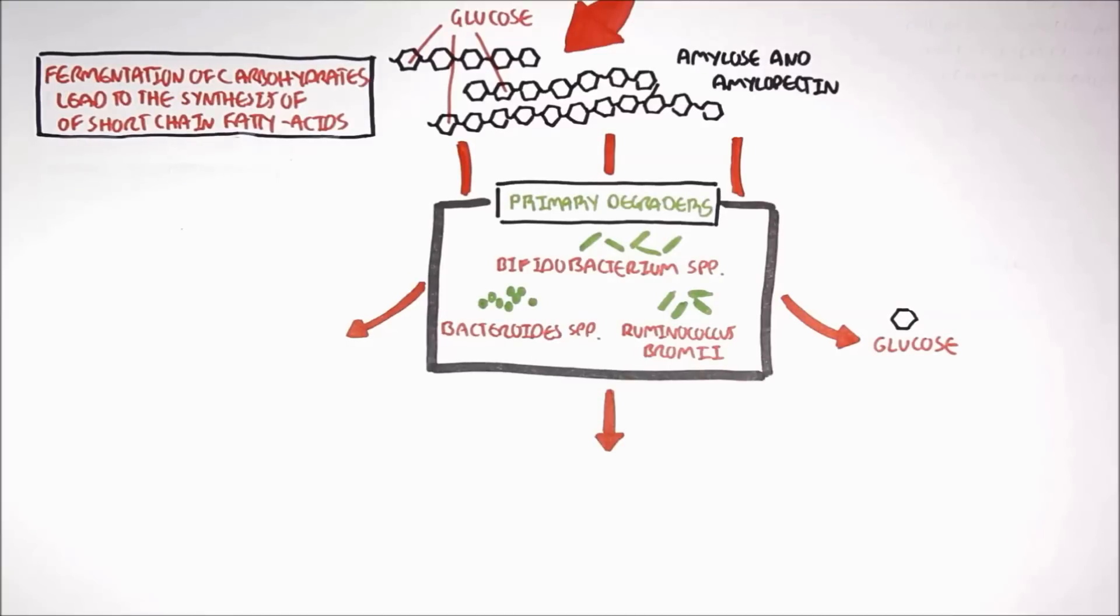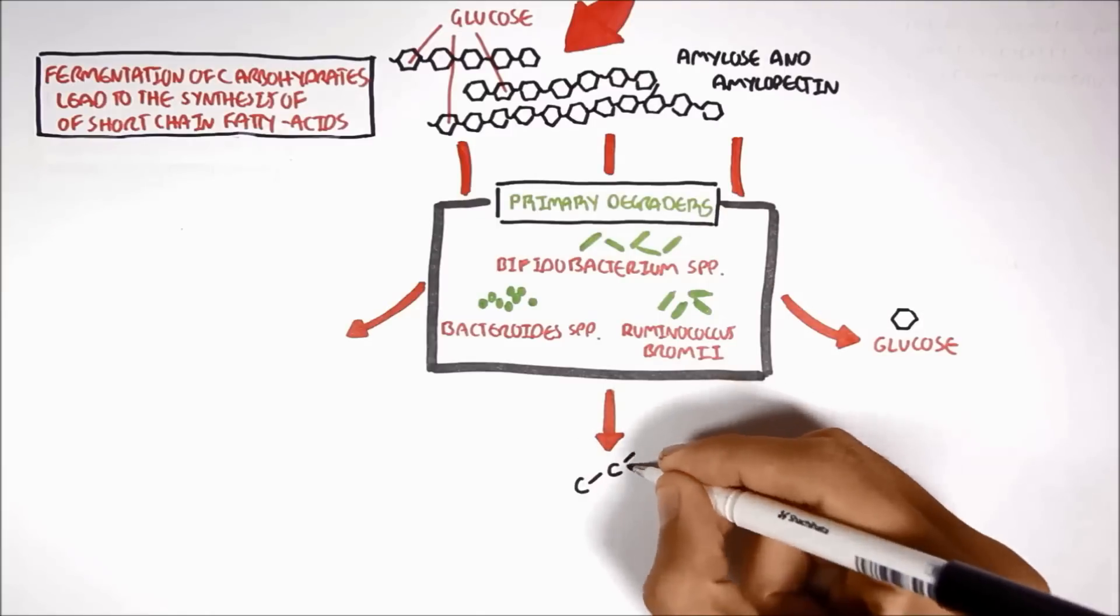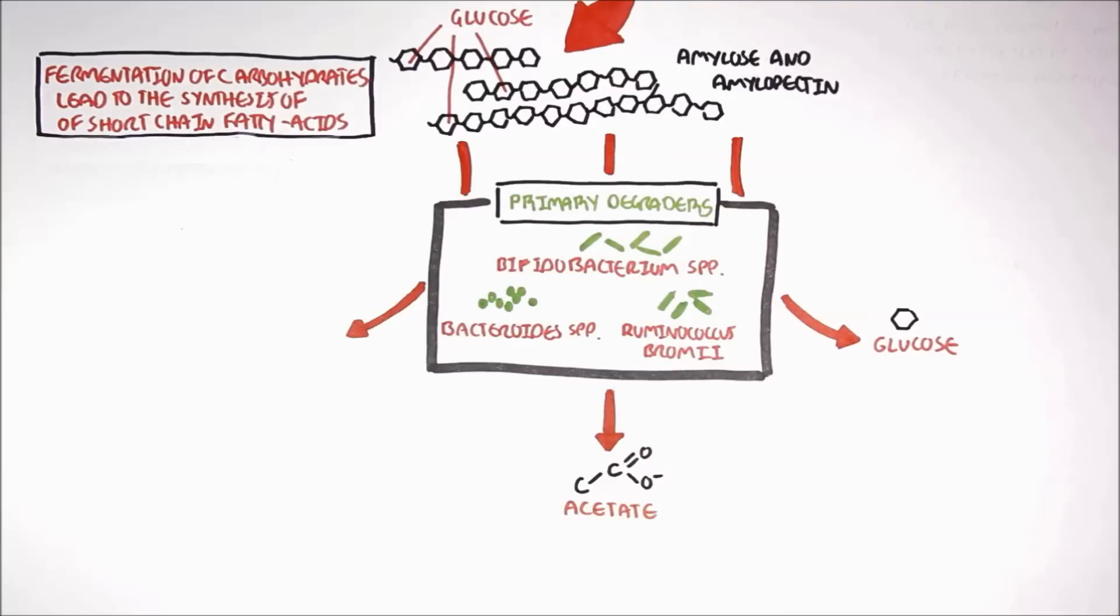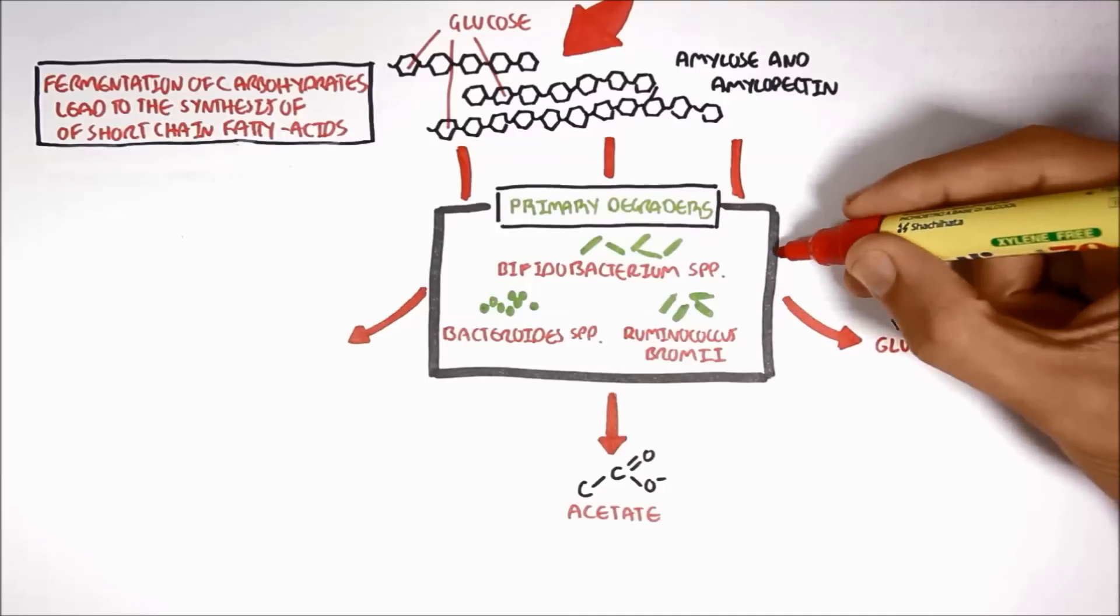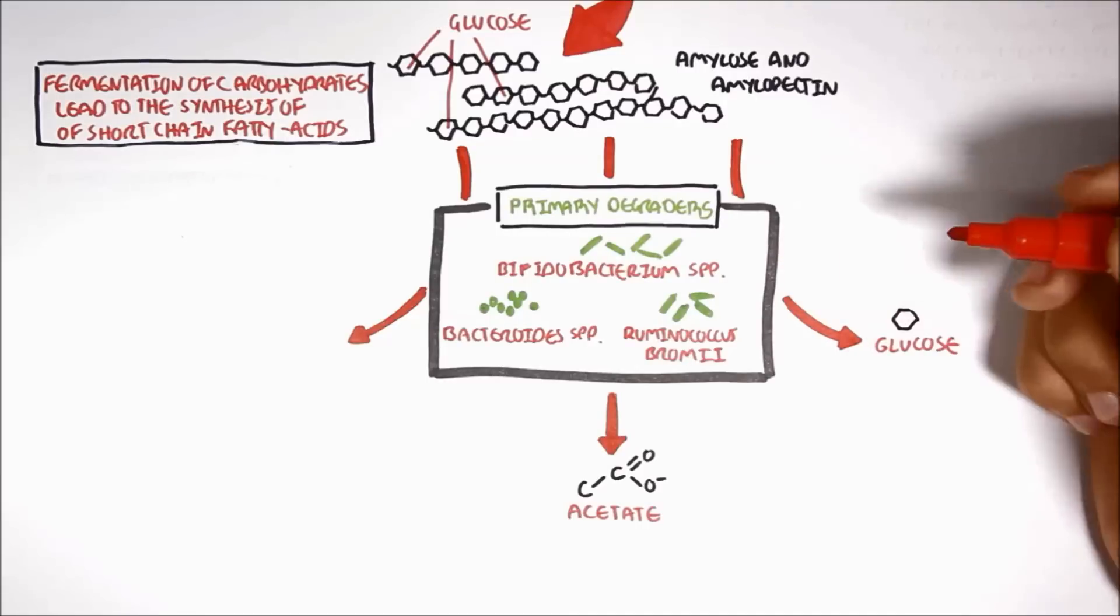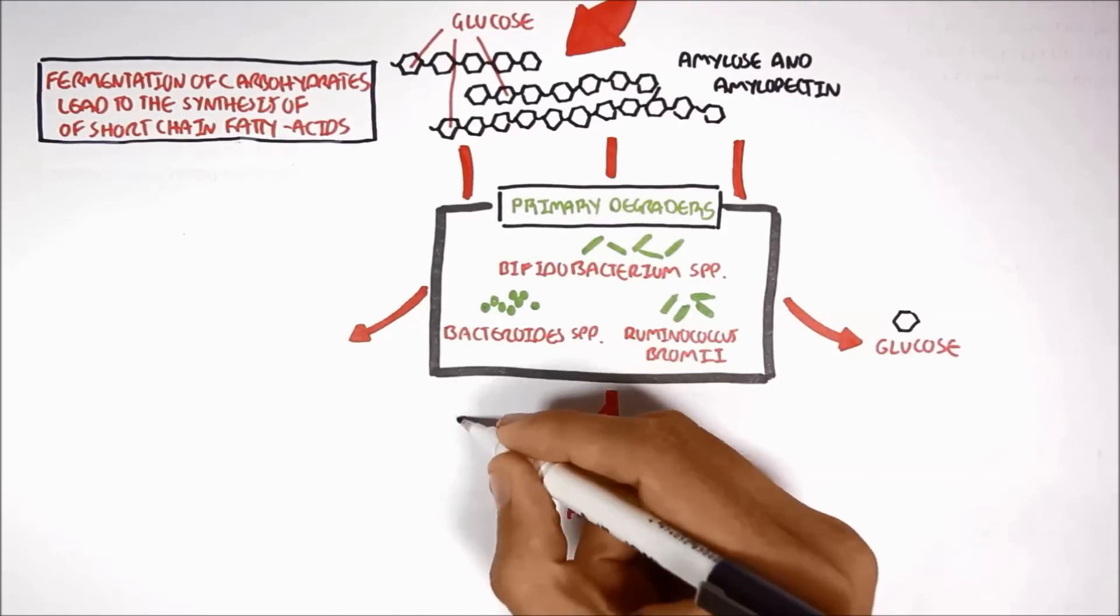Glucose can be released thanks to membrane-bound enzymes that cleave off glucose polymers. Through fermentation of glucose, these primary degraders can produce the 2-carbon short-chain fatty acid acetate, and release formate in the process.